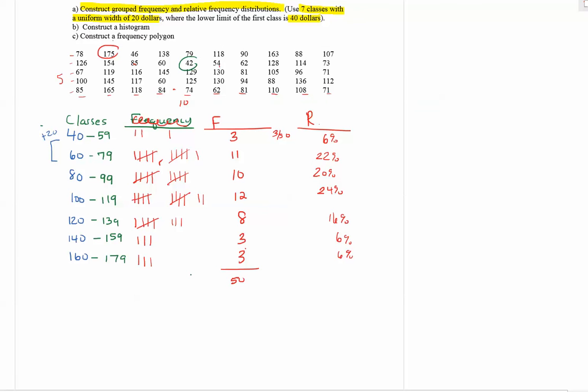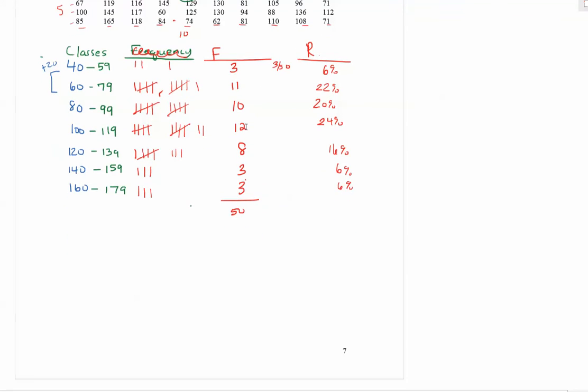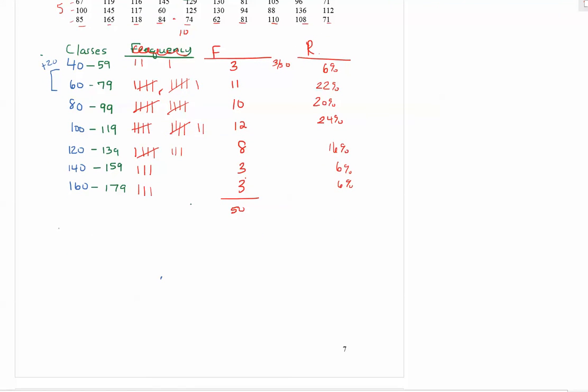Now let's construct a histogram. The histogram comes from the frequency distribution. So we're going to set up our axis and the y-axis is going to be the frequencies. And so the frequencies range from 3 all the way up to the highest of 12. So you can go up by 1's or you can go up by 2's there. So pick an appropriate scale.